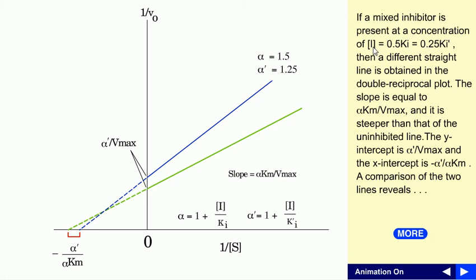If we add inhibitor at concentration I equals 0.5·Ki and also I equals 0.25·K'i, then α equals 1 plus 0.5 = 1.5, and α' equals 1 plus 0.25 = 1.25. So in this case we have α of 1.5 and α' of 1.25.